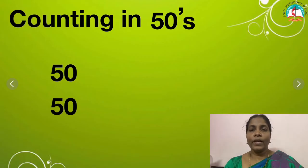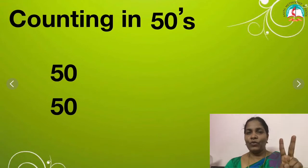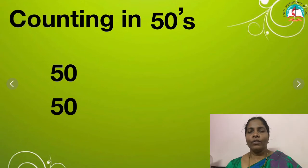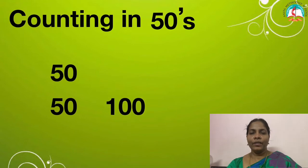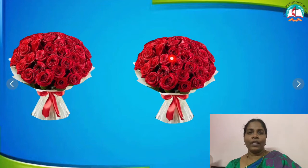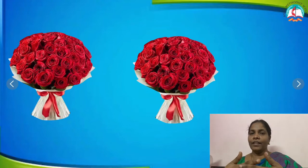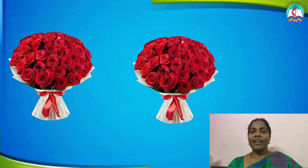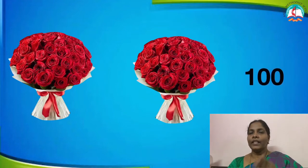Next one — counting in 50s. How many 50s are there? Two 50s. When we count two 50s together, we will get 100. Look at the picture: this bouquet has 50 flowers and this bouquet has 50 flowers. This 50 and this 50 flowers together, we will get 100 flowers. Understood, children?